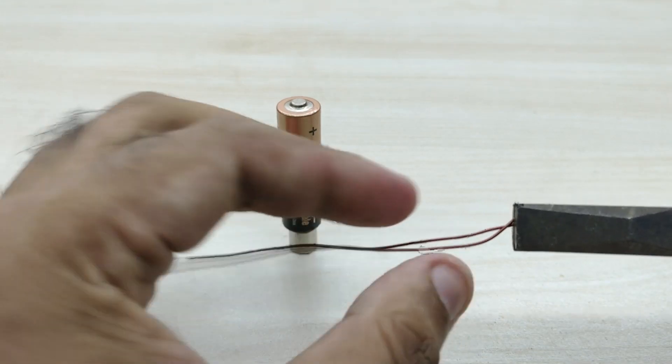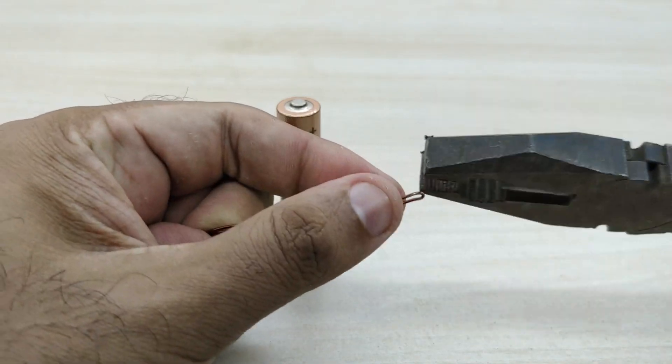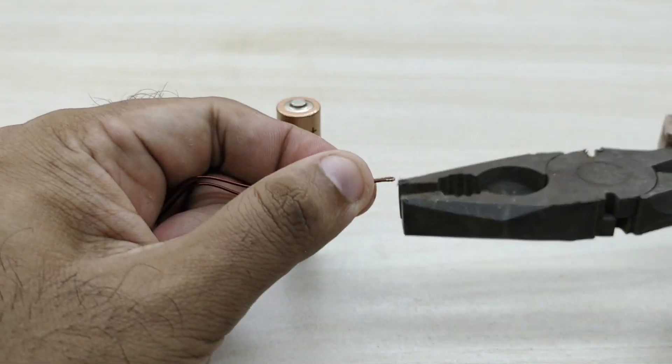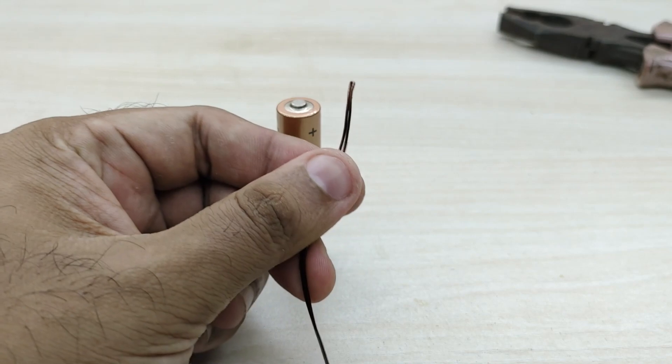Now take the copper wire and press the middle portion using a plier to make a sharp bend. This bend will be the pivoting point for rotation of the motor.